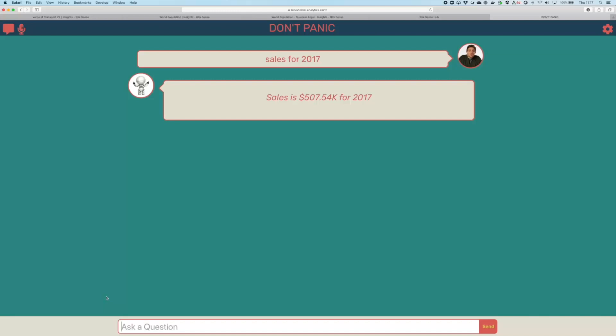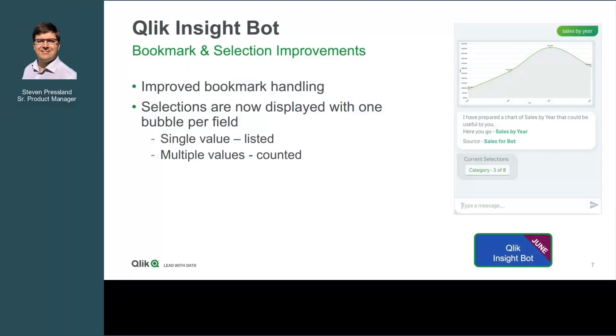This is just an example of how you can use the API to build both a more traditional experience and something more interesting in terms of use cases, particularly for things like voice assistants. This API unlocks these capabilities for customers who want to look beyond the current integrations that are possible. And finally, we're introducing some improvements to bookmarks and selections.